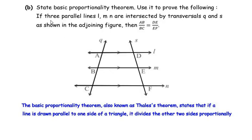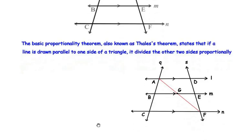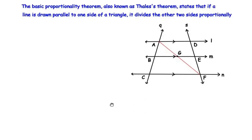Now let us focus on the second part. It is given that there are three parallel lines L, M, and N, and two transversal lines Q and S. We need to prove that AB over BC equals DE over EF. We have redrawn the given figure and will make a construction: we join point A with point F. This line divides the figure into two triangles — triangle ACF and triangle ADF.